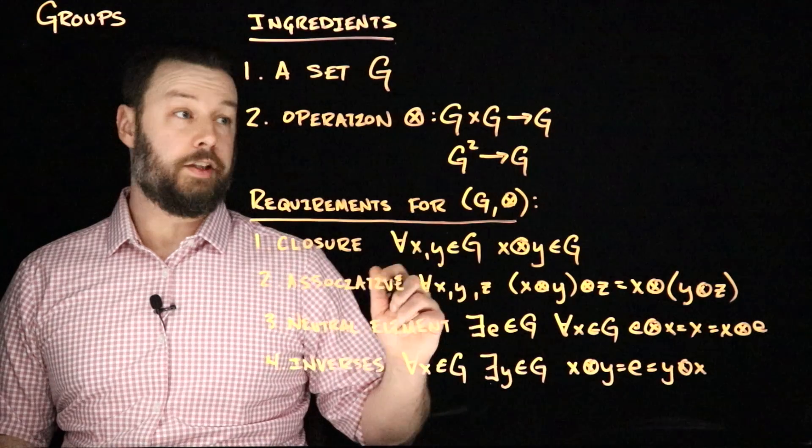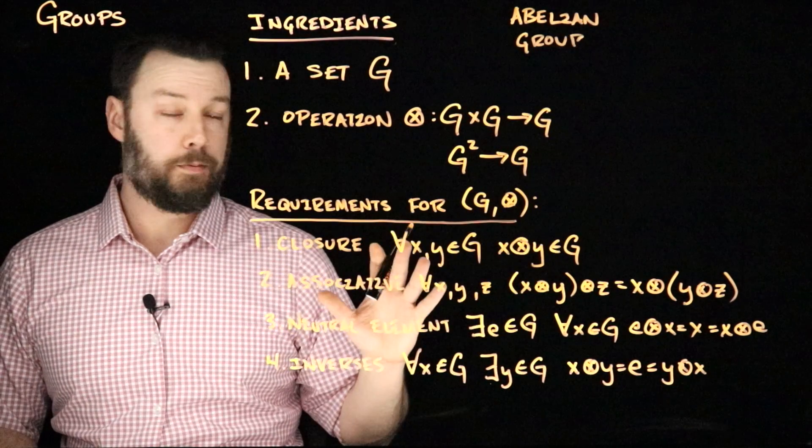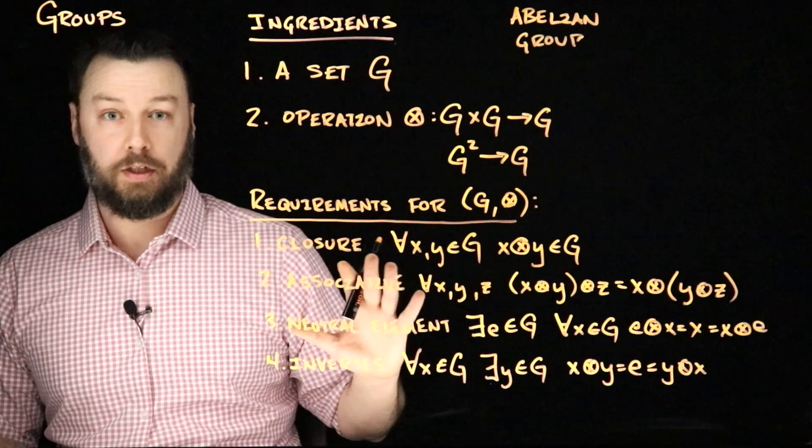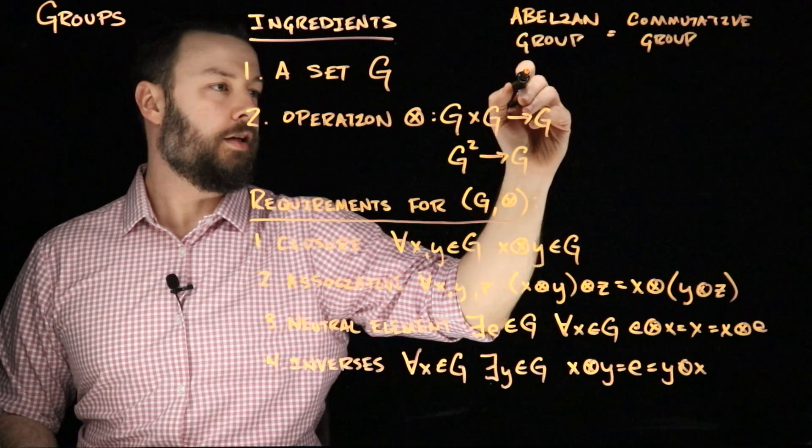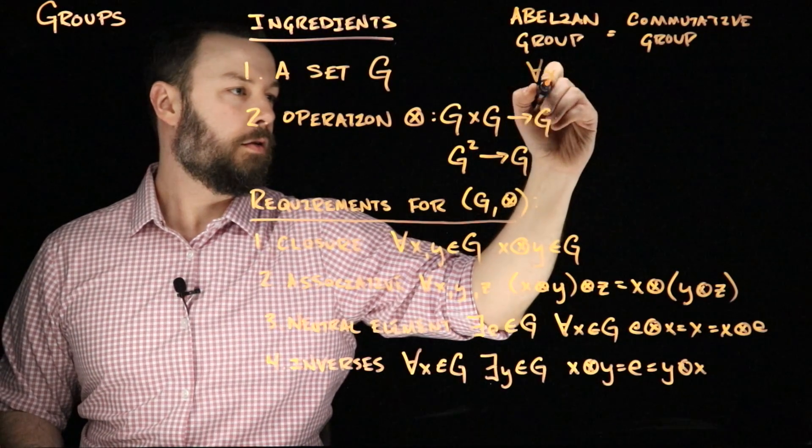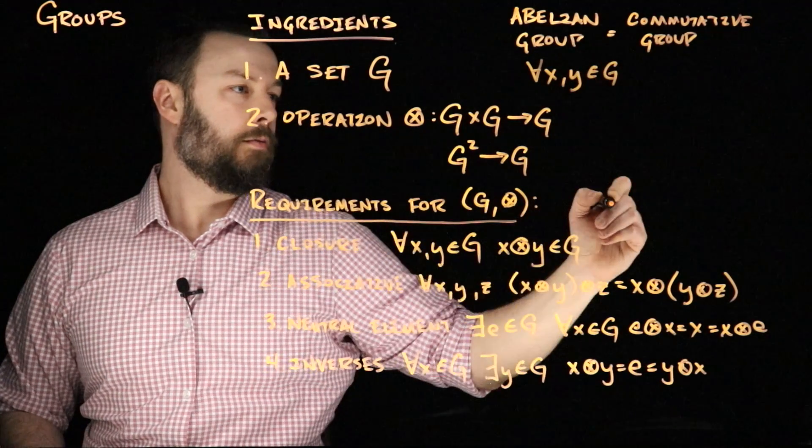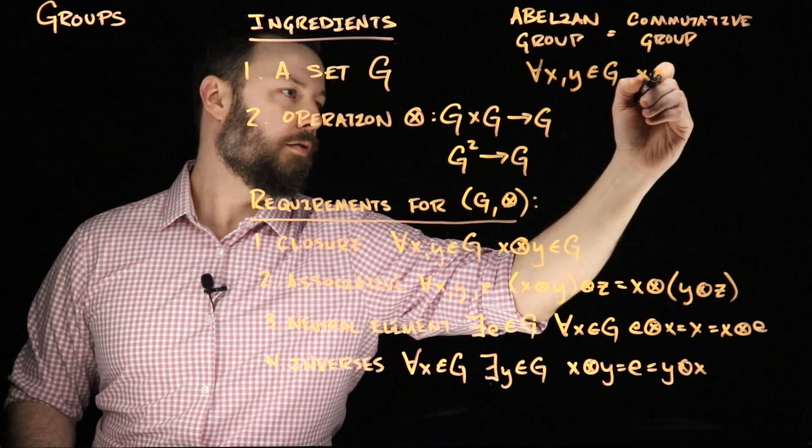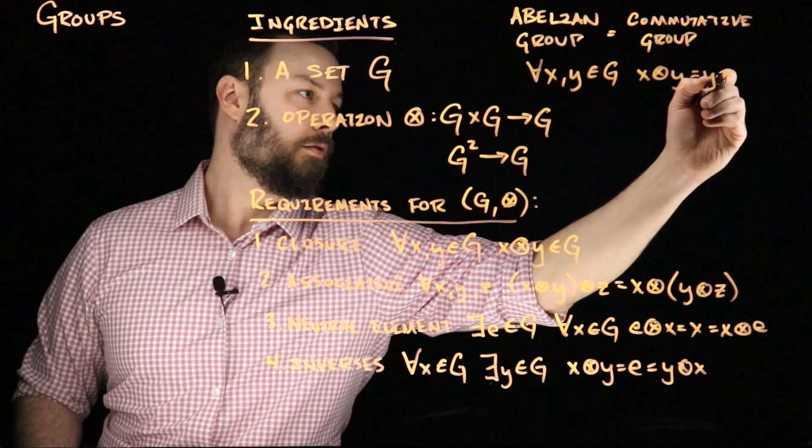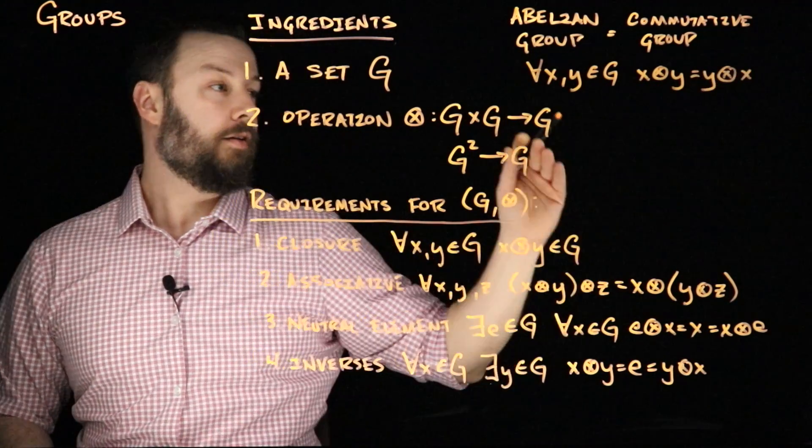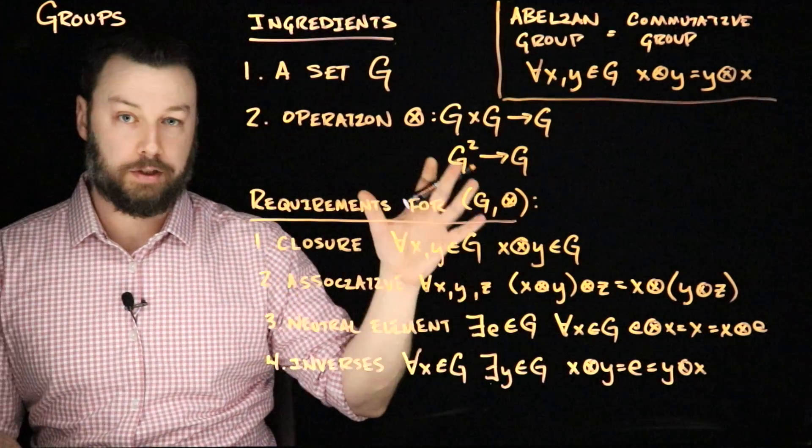A twist on groups is the idea of an abelian group. An abelian group satisfies all of these requirements to be a group, but is also commutative. That is to say that for all X and Y in G, X operator Y equals Y operator X. That does not have to be true in general. This is just an important special case.